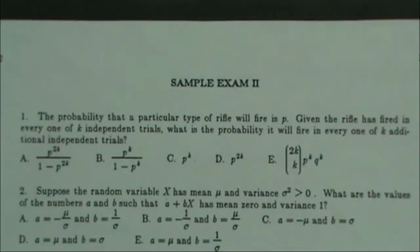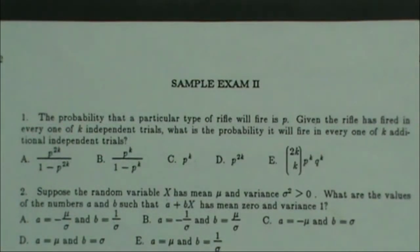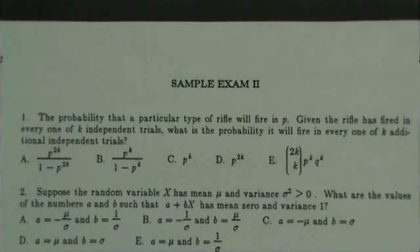This is sample exam two. Problem one: the probability that a particular type of rifle will fire is P. Given the rifle has fired in every one of K independent trials, what is the probability that it will fire in every one of K additional independent trials?